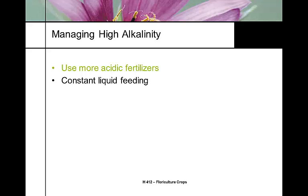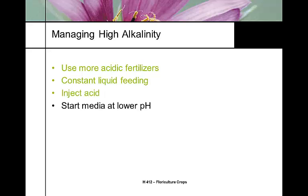With high alkaline water, we typically use more acidic fertilizers and constant liquid feeding. The higher alkalinity provides more buffering so pH doesn't swing as much, but we need to get the alkalinity out by injecting acid. Every time water precipitates its alkalinity into the potting soil, the pH goes up — it's just like adding dolomitic limestone. Whether it's calcium/magnesium carbonate/bicarbonate or sodium carbonate/bicarbonate, the pH will constantly climb. So we start with a lower pH in our potting soil.